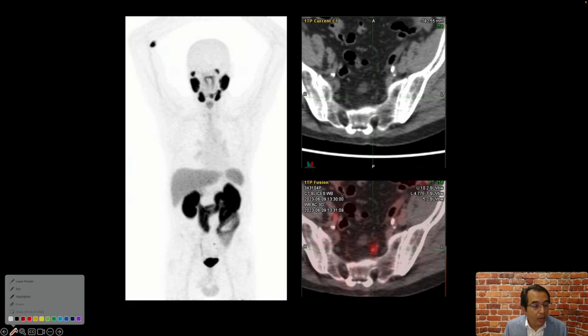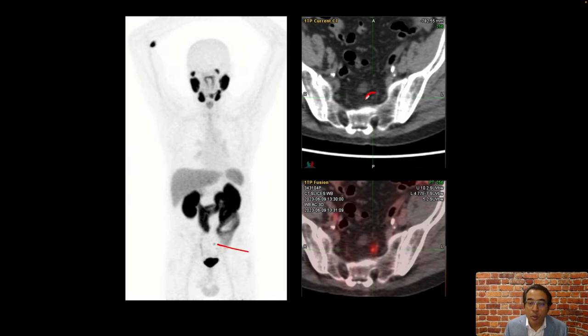There is a focus of abnormal uptake which is seen right here in the pelvis and corresponds to the subcentimeter lymph node on the CT image, consistent with recurrent or metastatic prostate cancer.